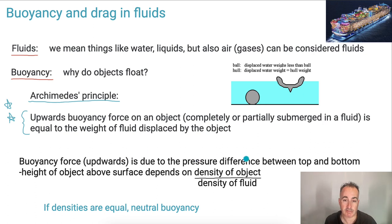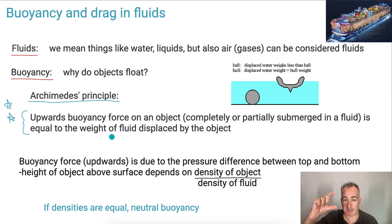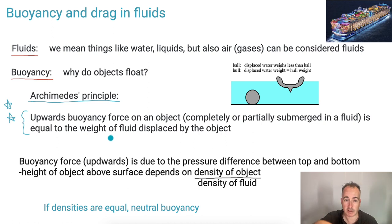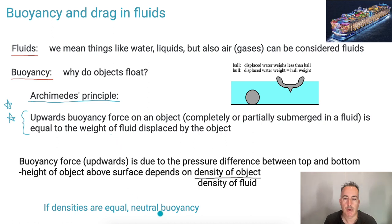The upwards buoyancy force is also due to the pressure difference between the top and the bottom. The height of an object above the surface depends on the ratio of the density of the object over the density of the fluid. If the densities are equal, we call it neutral buoyancy. The key thing to focus on is Archimedes' Principle.